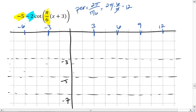And we're starting 3 units to the left. We know cotangent has a vertical asymptote at its starting point. Draw a vertical asymptote.